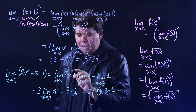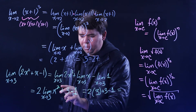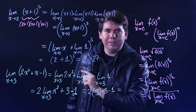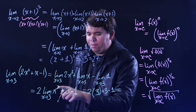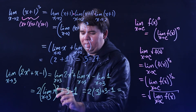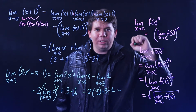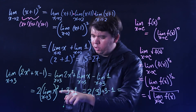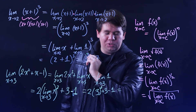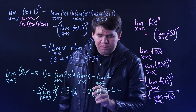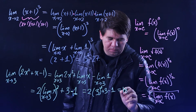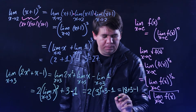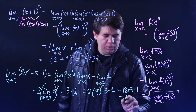Wait — this was x squared, not x. But we can remember the limit of x squared is just the limit of x, squared, using our power rule. So it will be the limit of x, which is 3, squared — that gives 9. So we have 2 times 9, plus 3, minus 1: that's 18 plus 3 minus 1, which equals 20.